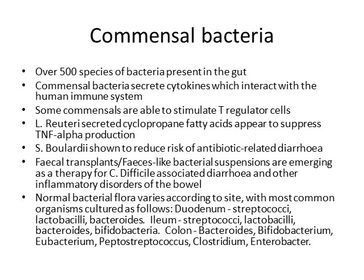Normal commensal bacterial flora vary according to GIT site. The most common organisms among the 500 species are: in the duodenum — streptococci, lactobacilli, and bacteroides; in the ileum — streptococci, lactobacilli, bacteroides, and bifidobacteria; and in the colon — bacteroides, bifidobacteria, eubacterium, peptostreptococcus, streptococcus, and clostridium. The general trend is that the upper GIT has more aerobic organisms while the colon has more anaerobic organisms.